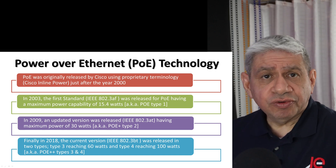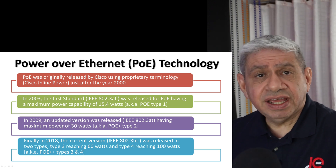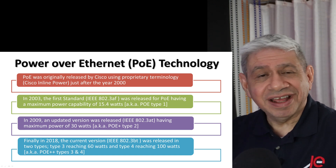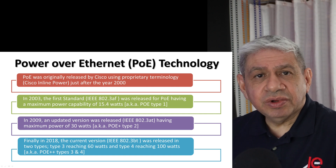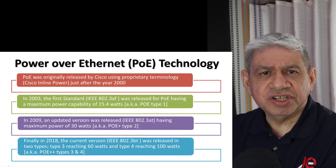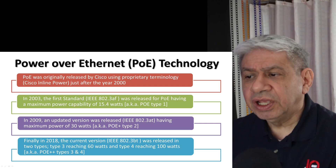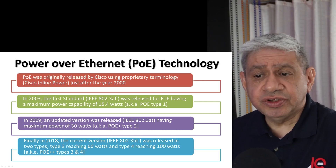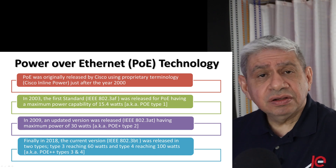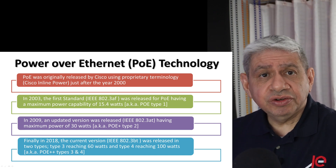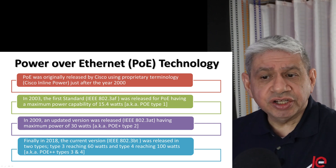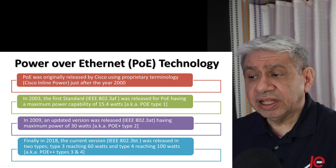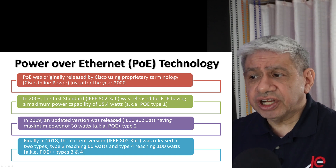Then there was a major overhaul of the standard in 2018, called 802.3bt. They came out with two different subtypes within the same standard: Type 3 and Type 4. Today you may hear them referred to as PoE+ and PoE++. With those you get further expansions in wattage — PoE+ can handle up to 60 watts, and PoE++ can theoretically reach up to 100 watts.